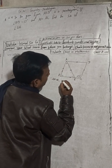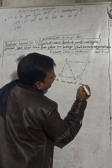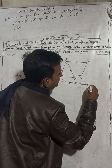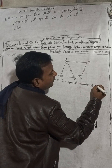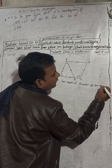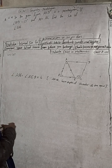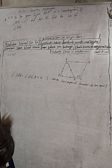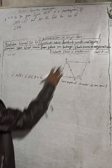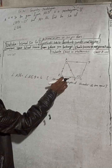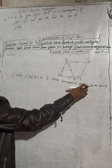Since AB is equal to AE is given, that is why this angle of triangle ABE — angle ABE is equal to angle AEB. We have supposed this angle as B, so this angle is also B, because these angles are equal.